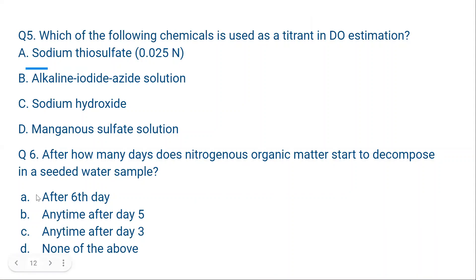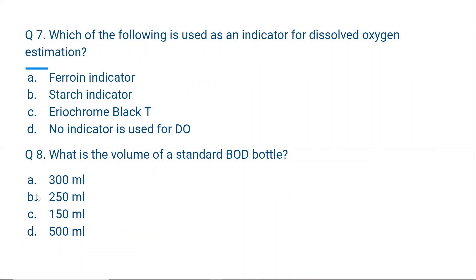Question number 7. Which of the following is used as an indicator for dissolved oxygen estimation? Correct answer is B, starch indicator. Ferroin indicator is used in COD. Eriochrome Black T is used in total hardness. So starch indicator is the correct option.